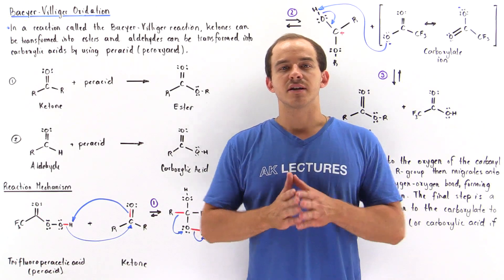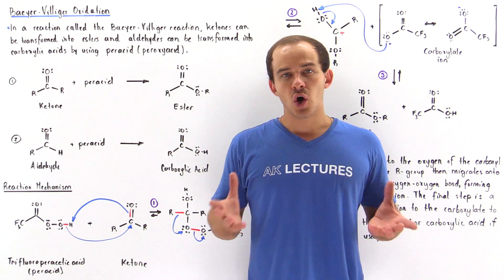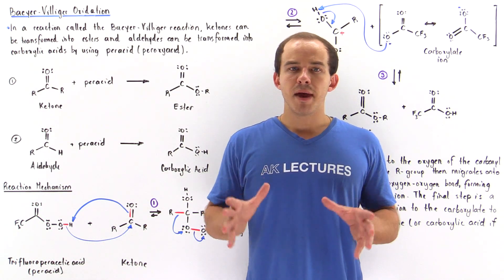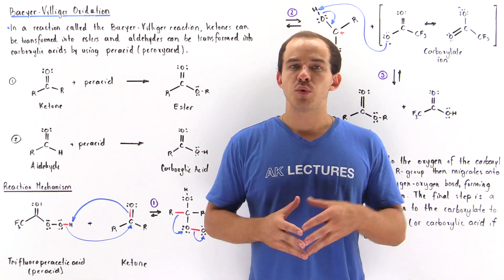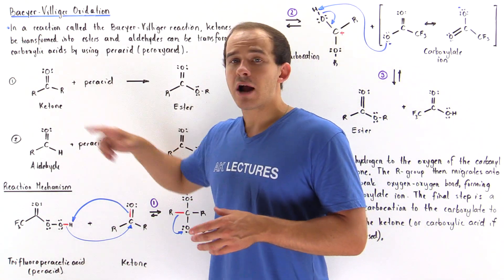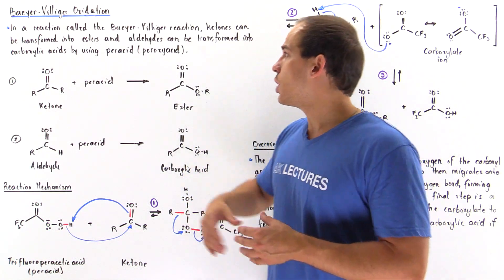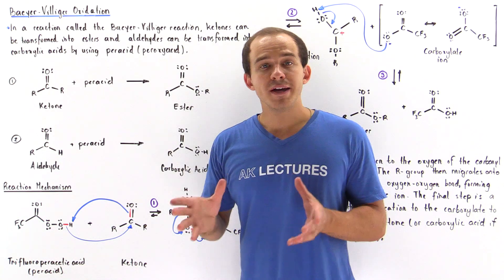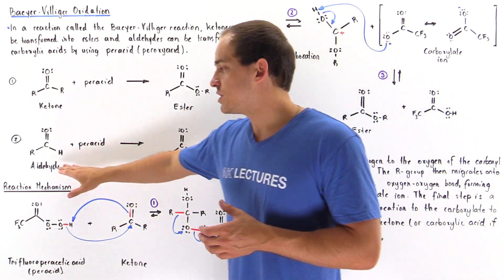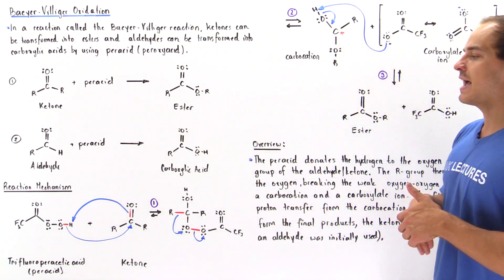In this lecture, we're going to discuss an oxidation reaction of ketones and aldehydes known as the Baeyer-Villiger oxidation. In the Baeyer-Villiger oxidation, we can either begin with ketones or aldehydes. If we begin with a ketone and mix it with a peroxide, also known as a peroxyacid, we produce an ester product. But if we instead use an aldehyde and mix it with our peroxide, we produce a carboxylic acid.